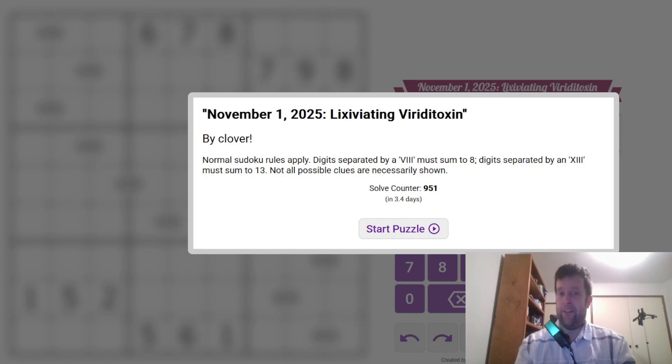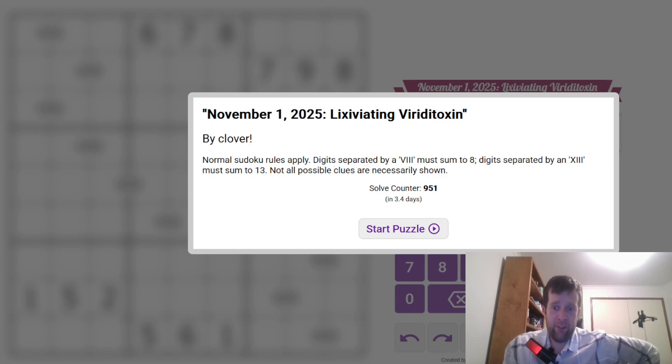G'day and welcome back to another GAS walkthrough. Today we're looking at November 1st, 2025's Lixiviating Viridotoxin. I don't know what Lixiviating is, but I do know Viridotoxin is probably green poison. By Clover. My name is Bill. It's a pleasure to be back. I've had a wonderful weekend away.